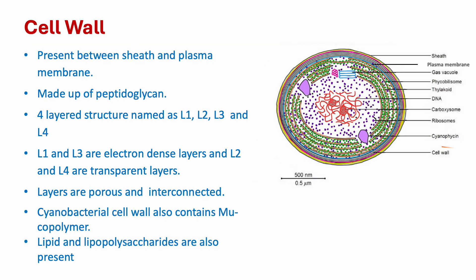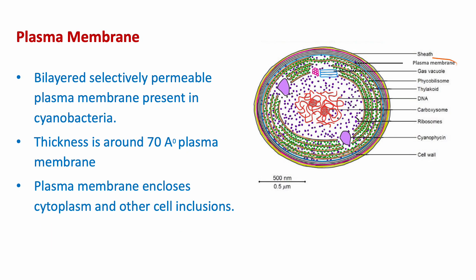Cell wall: the cell wall is present between the sheath and plasma membrane, mainly made up of peptidoglycan. It is a four-layer structure with layers named L1, L2, L3, and L4. L1 and L3 are electron-dense layers, while L2 and L4 are transparent layers. All layers are porous and interconnected. Like gram-negative bacteria, cyanobacteria also contain mucopolymer, lipid, and lipopolysaccharides.